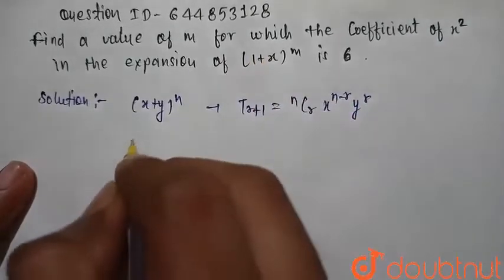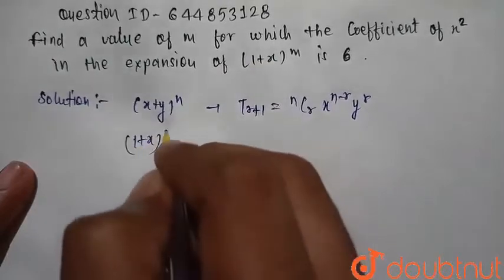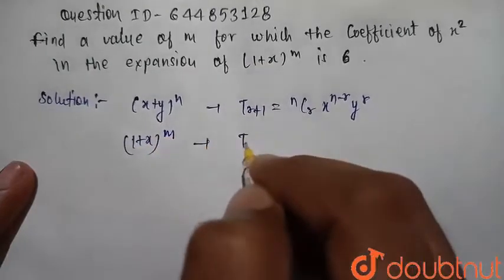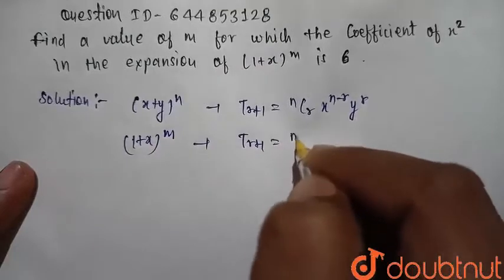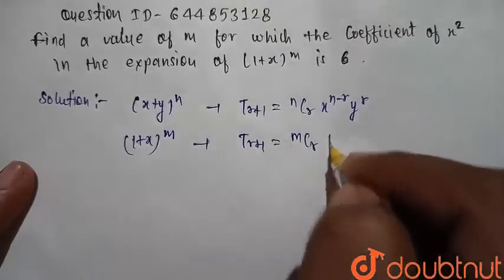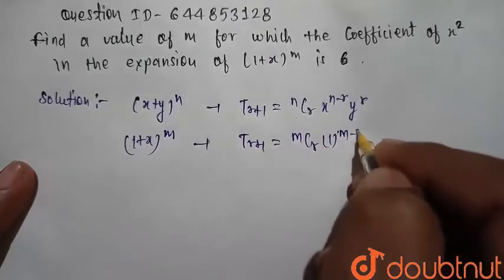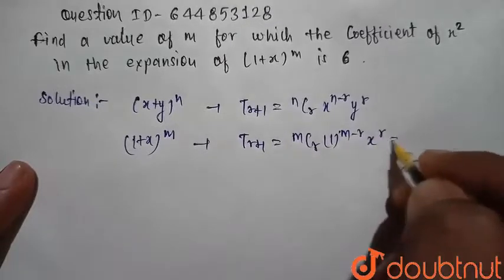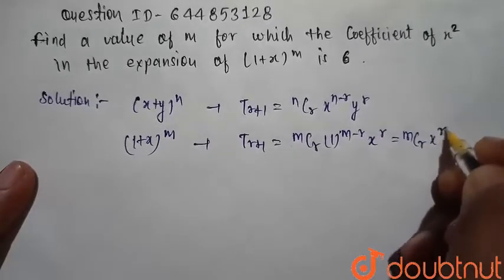If we want to find the general term of this expansion, that is 1 plus x raised to power m, we write that is Tr+1 equals mCr times 1 raised to power m minus r into x raised to power r, that is equal to mCr into x raised to power r.